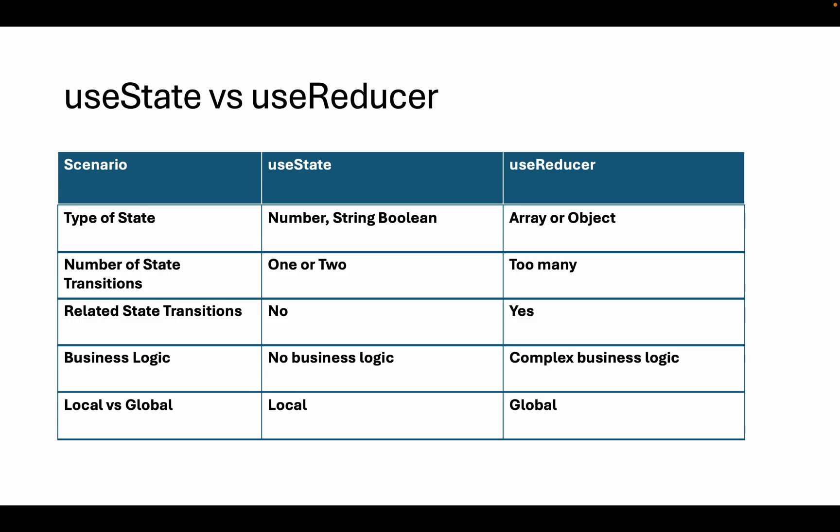Lastly, local state versus global state. If you need state inside a single component only, it's better to go with the useState hook. In case you want to share state within multiple components or make your state available globally, it's better to go with the useReducer hook.